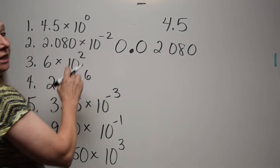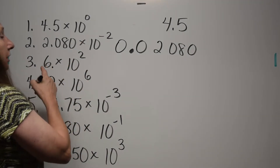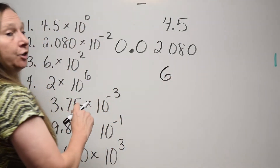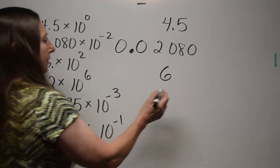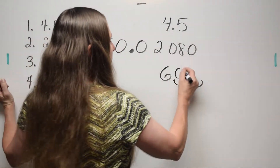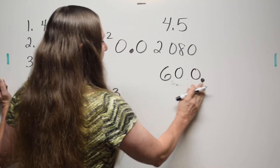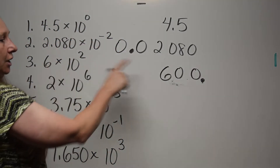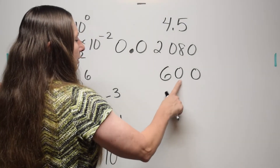Six times 10 to the second. This is the number six — it's understood that the decimal is right there. This is a positive exponent, so you're going to move the decimal two places to the right: one, two. This is the number 600. There it is in decimal form — the number 600.